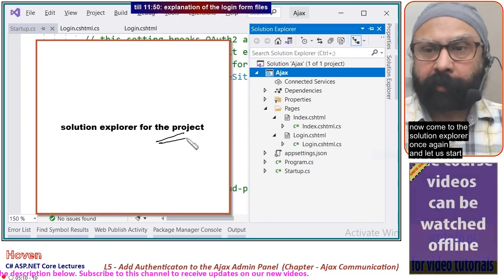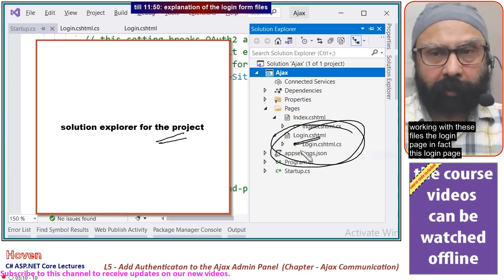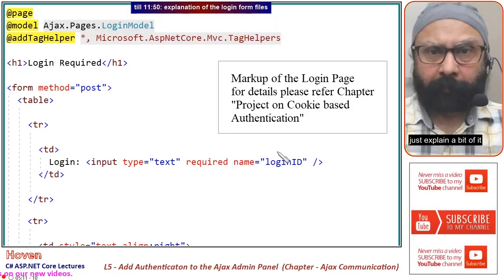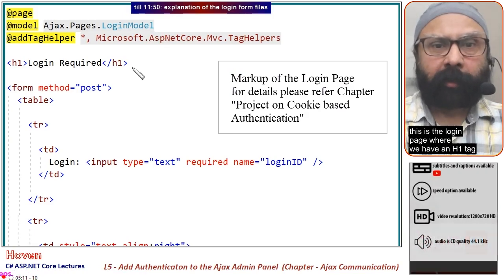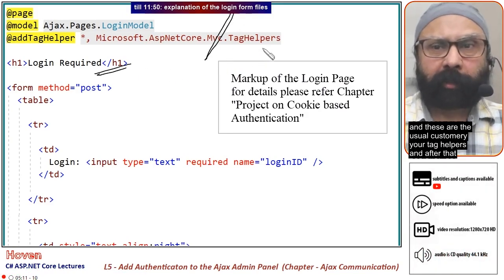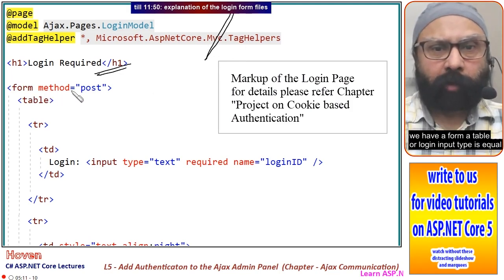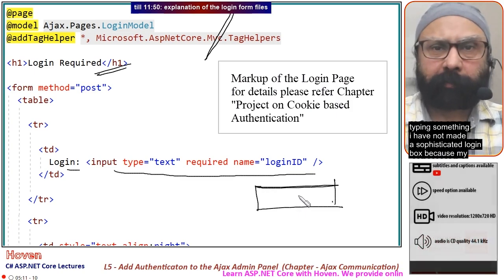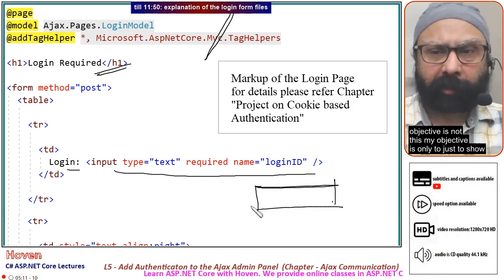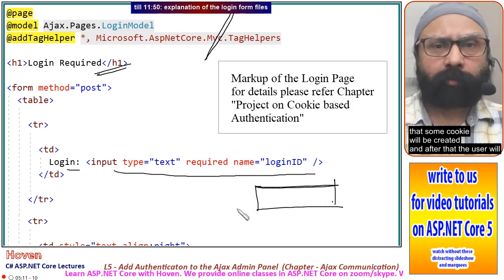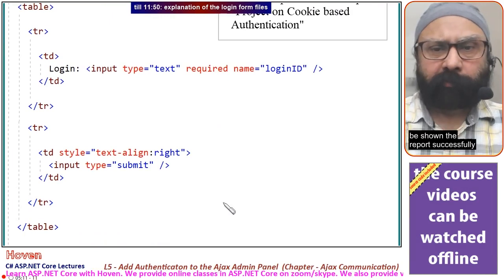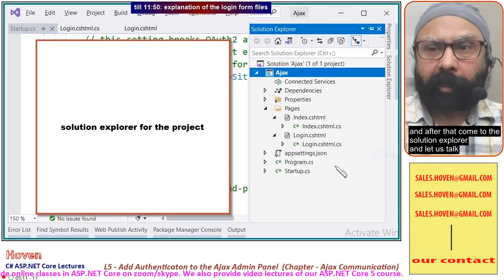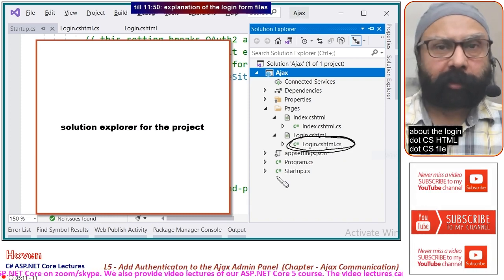Now come to Solution Explorer and let us work with the login page files. This login page has been discussed in the cookie-based authentication chapter. The login.cshtml markup has an H1 tag, tag helpers, a form, a table, and an input of type text for the login box, plus a submit button. I have kept it simple because my objective is only to demonstrate that a cookie will be created and the user will then see the report successfully.